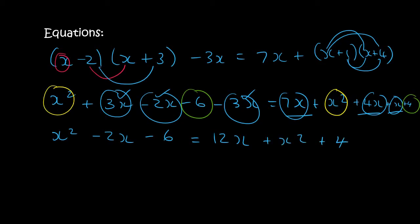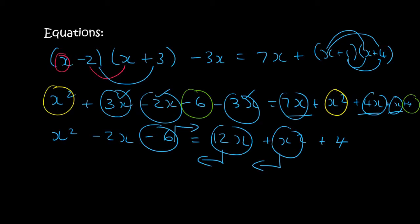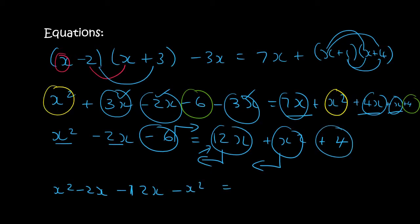Now we bring all the x's to one side and all the numbers to the other side. On the left we already have x squared minus 2x. Then we bring the 12x over, so it becomes minus 12x, and we bring the x squared over, so it becomes minus x squared. On the right we have 4, and the minus 6 becomes plus 6. The x squares cancel, leaving minus 2x minus 12x, which is minus 14x, equals 4 plus 6, which is 10.